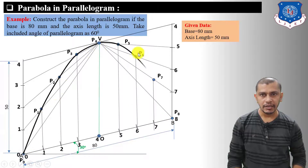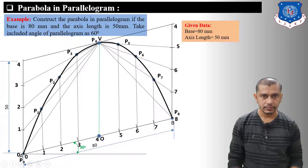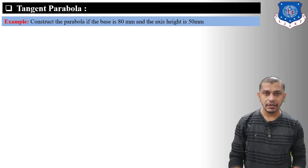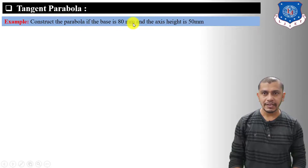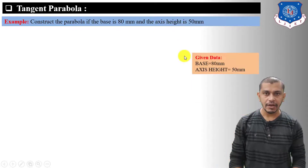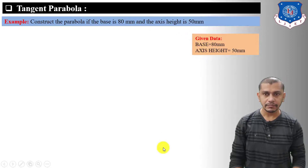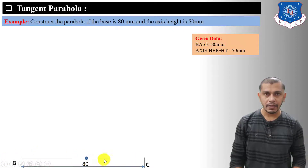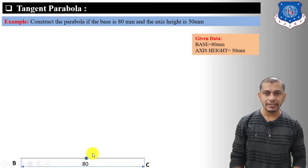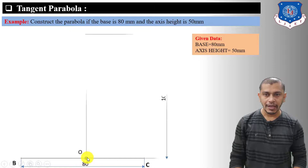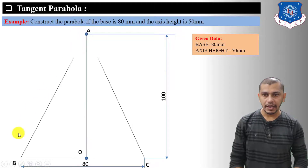Draw a freehand curve passing through P0, P1, P2, P3, P4, P5, P6, P7, and P8 — this will be the parabola in parallelogram. Now let's move to the tangent method. Construct the parabola where base is 80 mm and axis height is 50 mm. Draw the base 80 mm long, then from midpoint O of base BC draw a line perpendicular to BC having length equal to twice the axis — that is 100 mm — and mark this point A. Connect AB and AC.